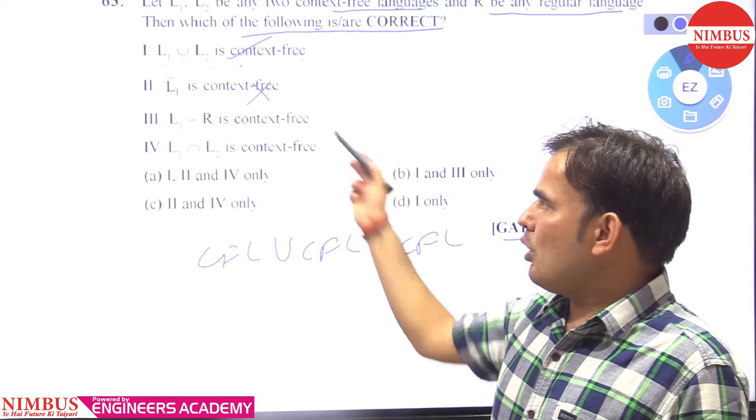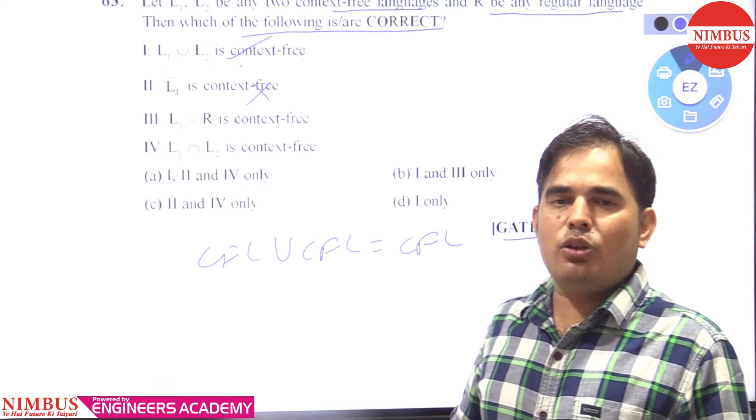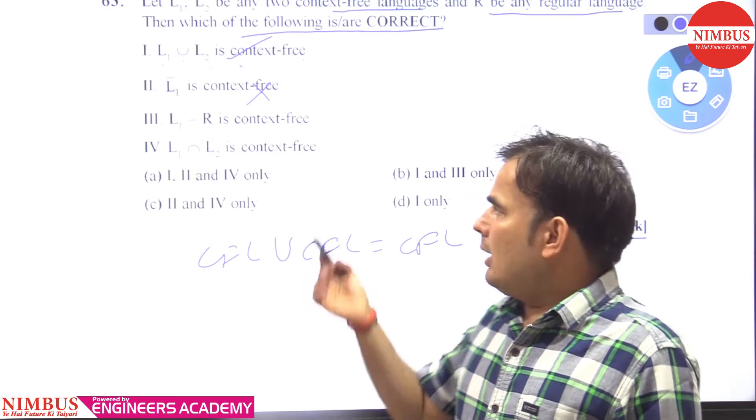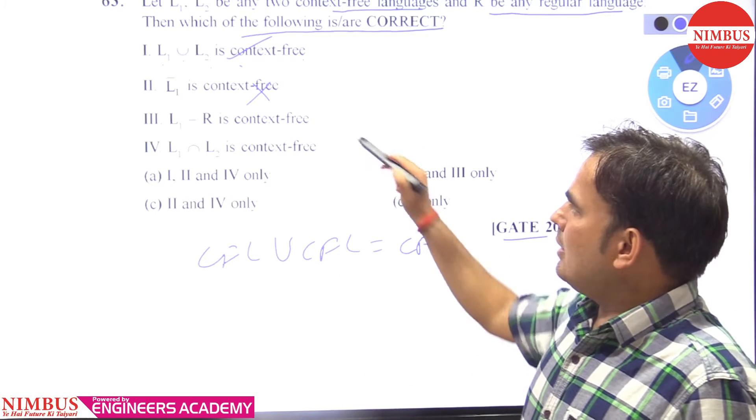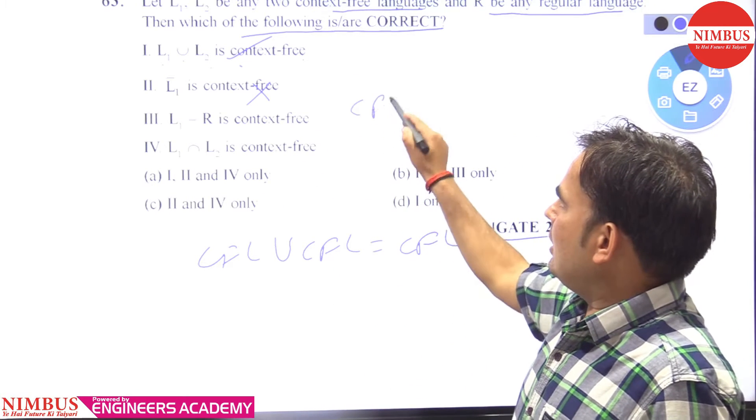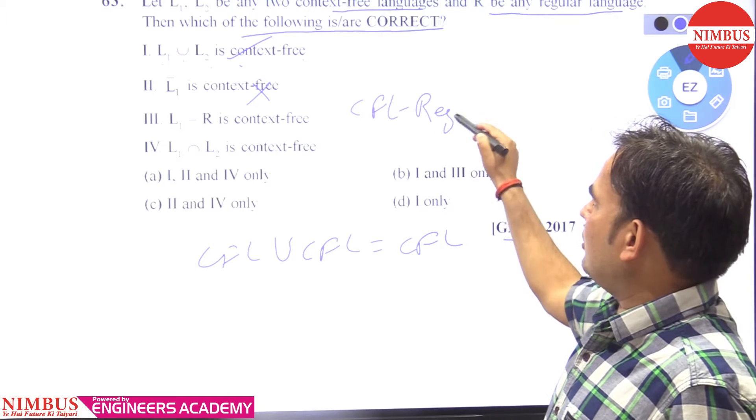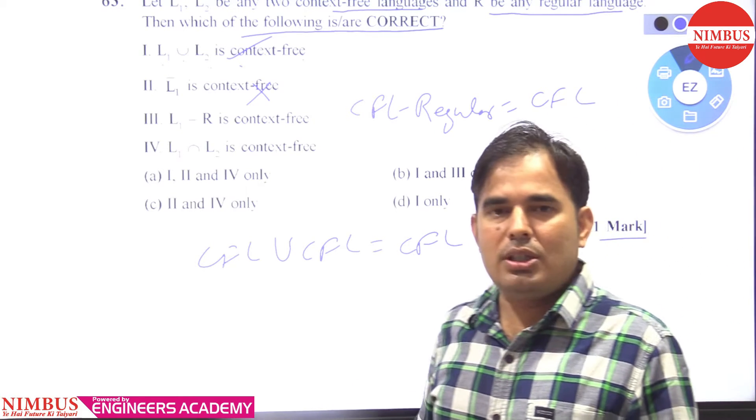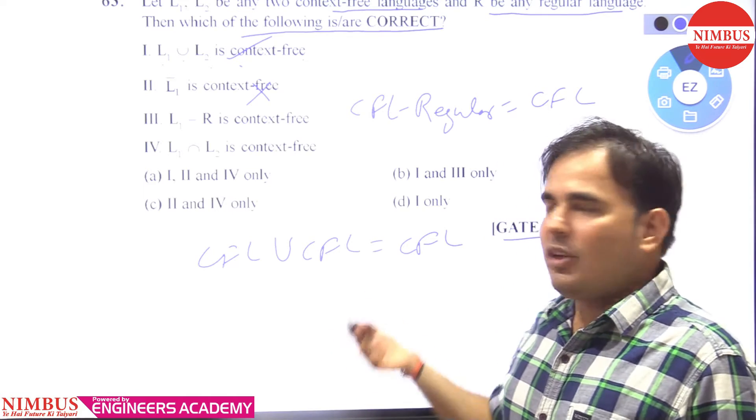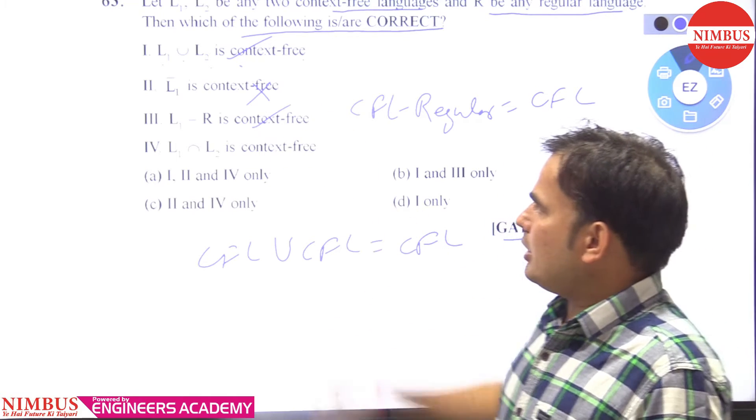L1 minus R is context free. Yes, as we know that CFL are closed under difference with regular. CFL are closed, difference with regular. So L1 is CFL. CFL minus regular is CFL. As we know that CFL are closed under difference with regular, this statement is true.